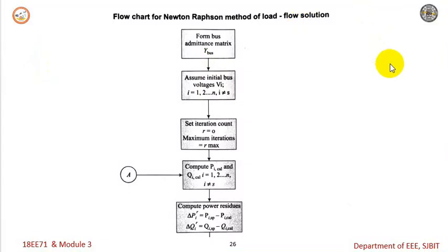As we have discussed in the flowchart of the Gauss-Seidel method, the first step here is also the same: we need to form the Y-bus matrix, that is, the formation of the admittance matrix known as the Y-bus matrix.